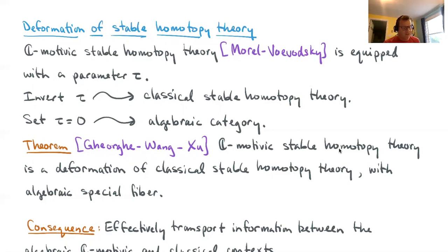If you invert this parameter τ, then what happens is that you can recover classical stable homotopy theory. So C-motivic stable homotopy theory contains all of classical stable homotopy theory by inverting τ. On the other hand, if you set this parameter τ equal to zero, then what you obtain is a category that has an entirely algebraic description. That's a pretty surprising result. This is not something that was anticipated originally, but is nevertheless true.